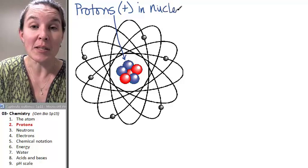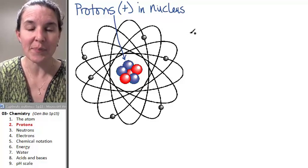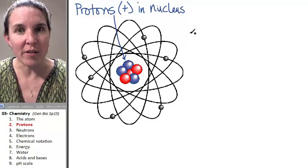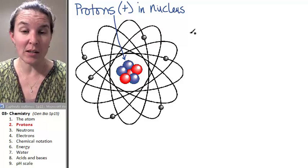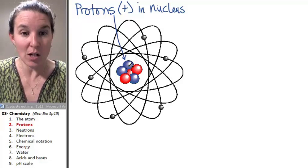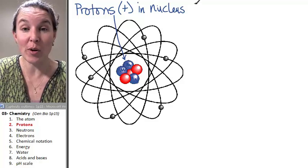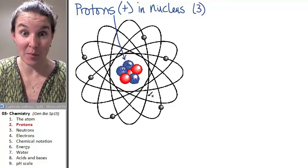All atoms have a nucleus, and protons are one of the things you're going to find in the nucleus. Is it the only thing in the nucleus? No, it's the blue thing in the nucleus. Yes, so we actually have three protons in this atom that we're looking at right here.